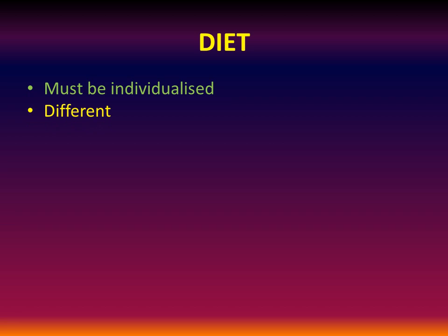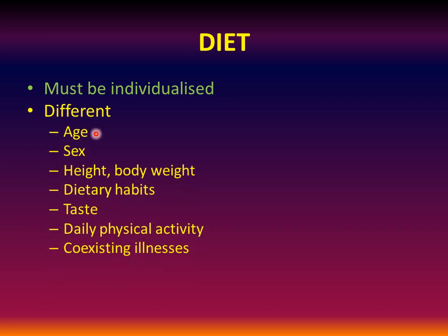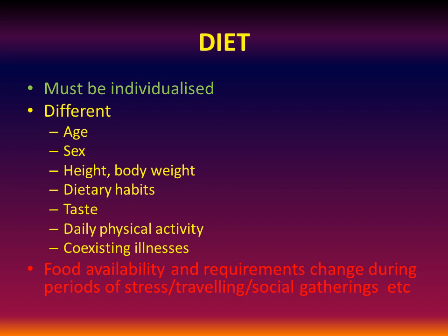A diet plan has to be individualized because people have different age, different sex, different height, different body weight, different dietary habits, taste, and daily physical activity. Co-existing illnesses also decide the diet of a diabetic. There is also a difference in diet during periods of stress, travelling, and social gatherings.